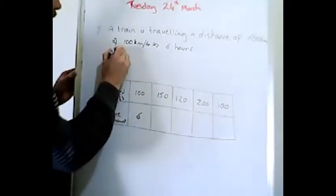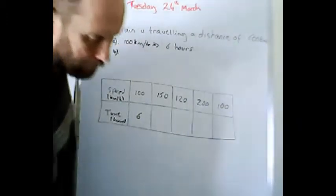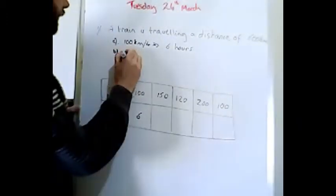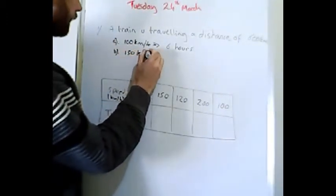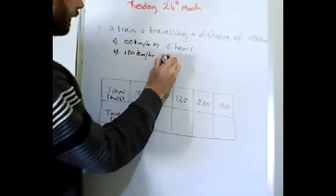Now then, if the train travels at 150 kilometers per hour, how long will it take?